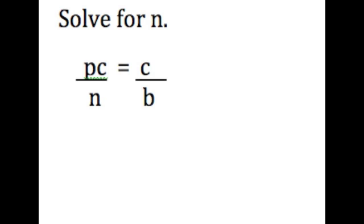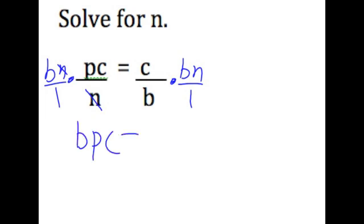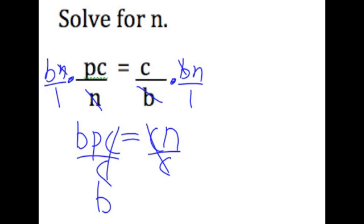This problem was the problem that more people got wrong than any other problem. One way to approach it would be to multiply both sides by the denominator, so that would be bn over 1 when you combine the two denominators. On one side, the n's cancel out, and you get bpc. On the other side, the b's cancel out, and you get cn. But we're solving for n, so we still need to divide both sides by c. They mark out, and our final answer is bp equals n.